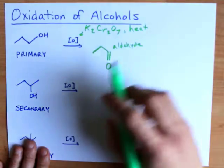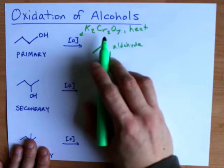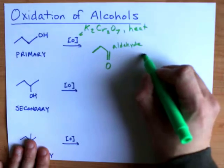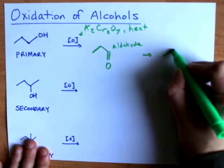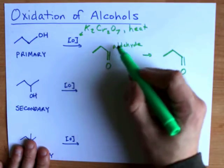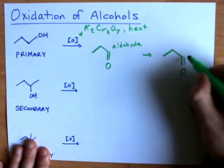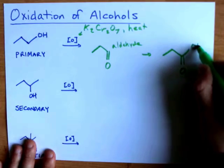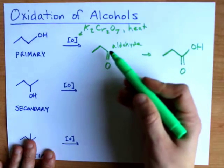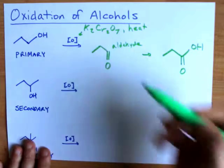Now aldehydes can be further oxidized by reflux dichromate. They become carboxylic acids. So I'm going to redraw my aldehyde but instead of having an H on this terminal carbon I'm going to replace it with OH. Oxidation here means adding that oxygen in between the carbon and the hydrogen.